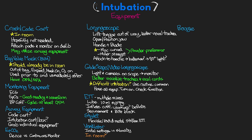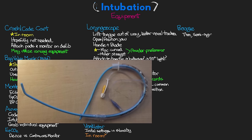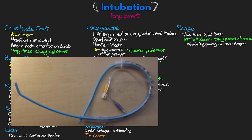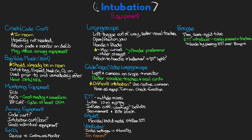Another good piece of equipment to have around is the bougie — a thin, semi-rigid silicone tube you can think of as an endotracheal tube introducer. The bougie can be passed into the trachea because of its small size, and then used as a guide for the endotracheal tube by passing the ET tube over it. You'd get the bougie through the vocal cords and into the trachea, then slide the ET tube along the bougie. Like the GlideScope, its use in routine intubations is becoming more common.